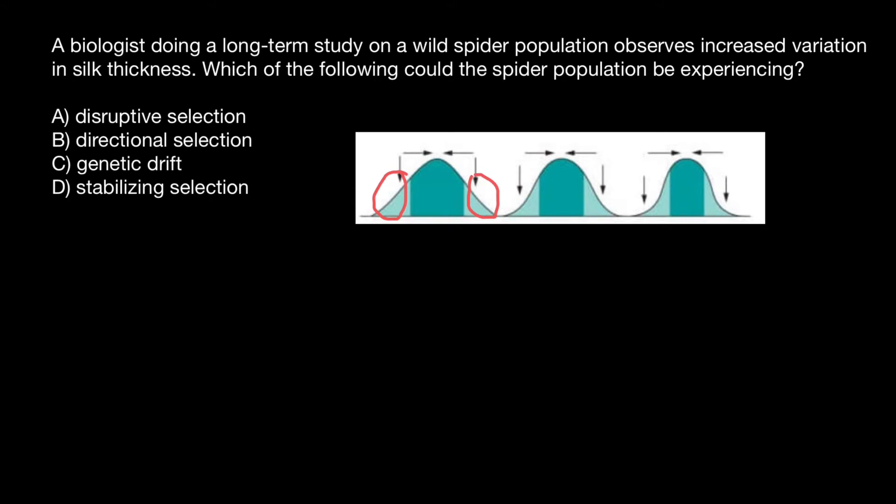According to this population, this population can be under conditions when these extreme phenotypes would not be in favor and the fitness is going to be less than those which are intermediate. Then generation after generation, we are going to see that the frequency of these phenotypes is going to decrease.